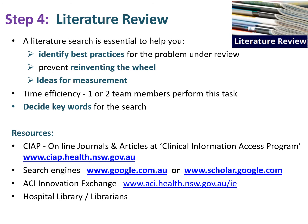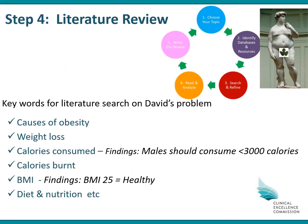You can conduct the search in many different ways — through the CEC app online, Google, Google Scholar, or the ACI Innovation Exchange at the URL shown, which is a New South Wales repository where quality improvement project knowledge is housed. Also think about going to your hospital library or librarian to help with the literature review. With David's example, keywords he could search on include causes of obesity, weight loss, calories consumed, calories burnt, BMI, diet and nutrition, and many other related terms.